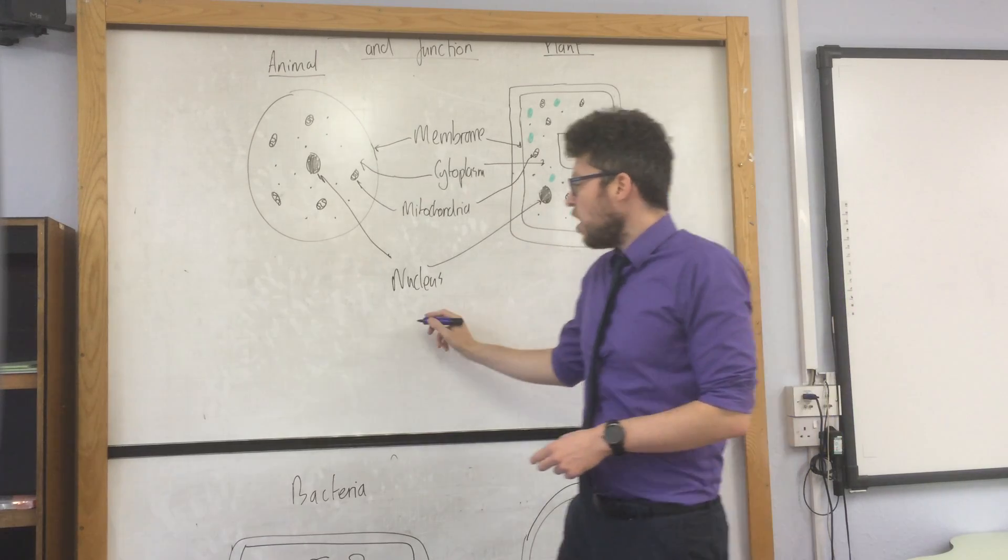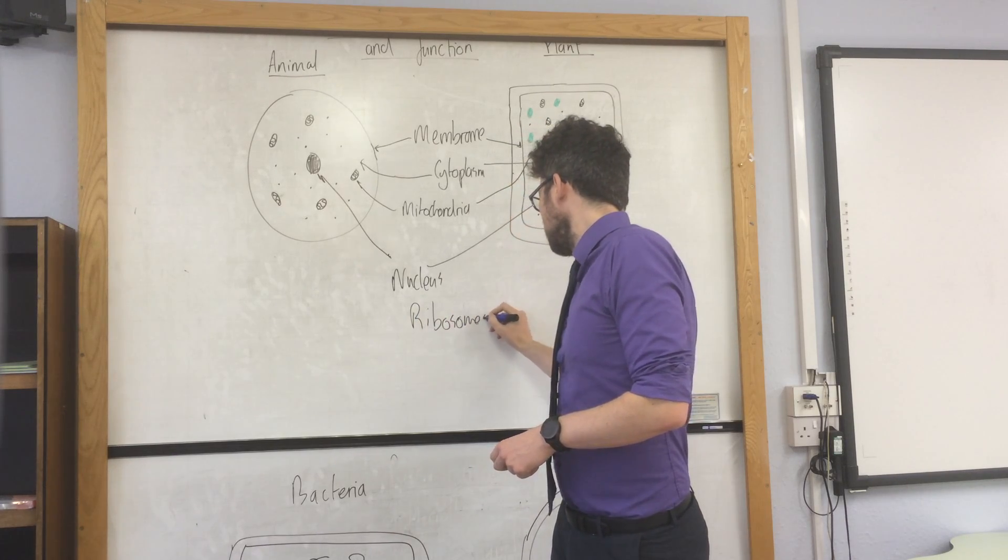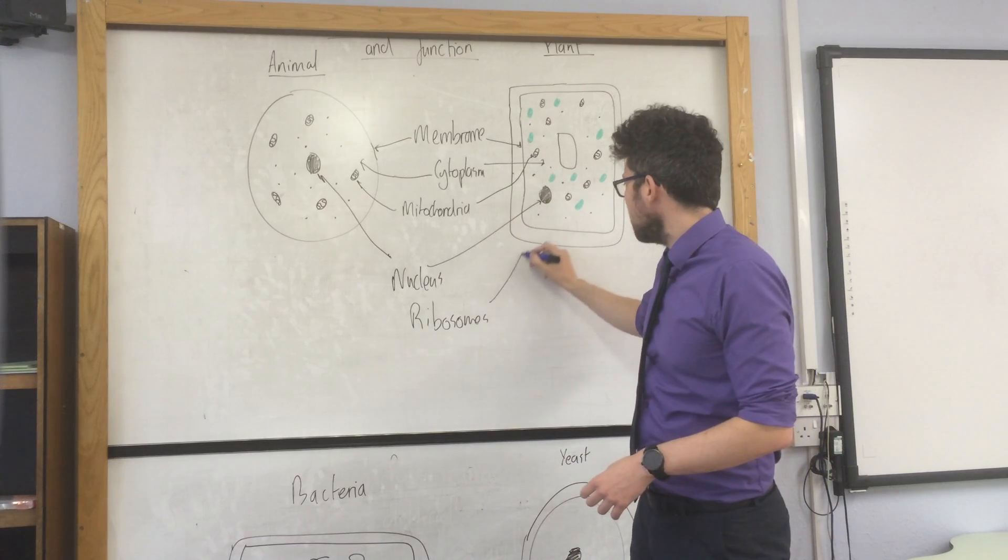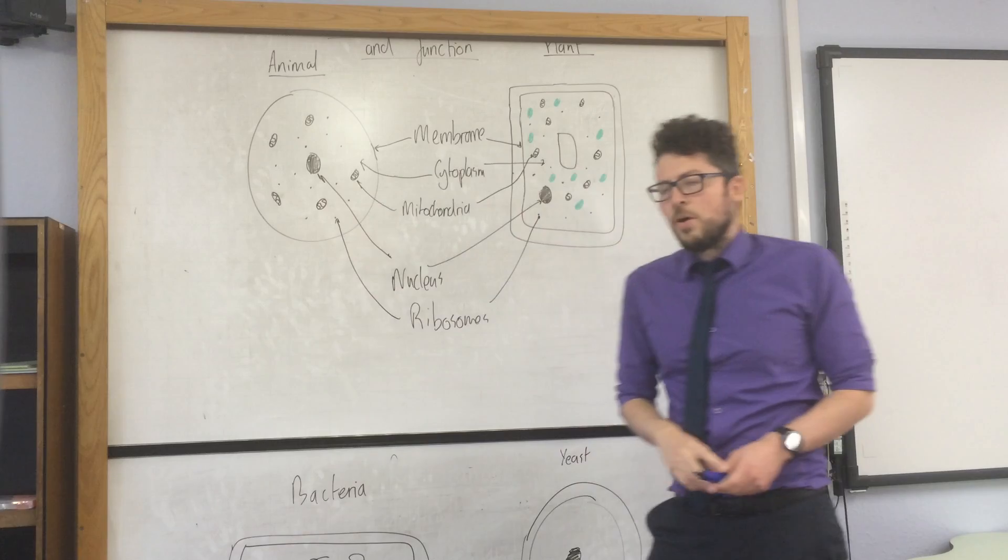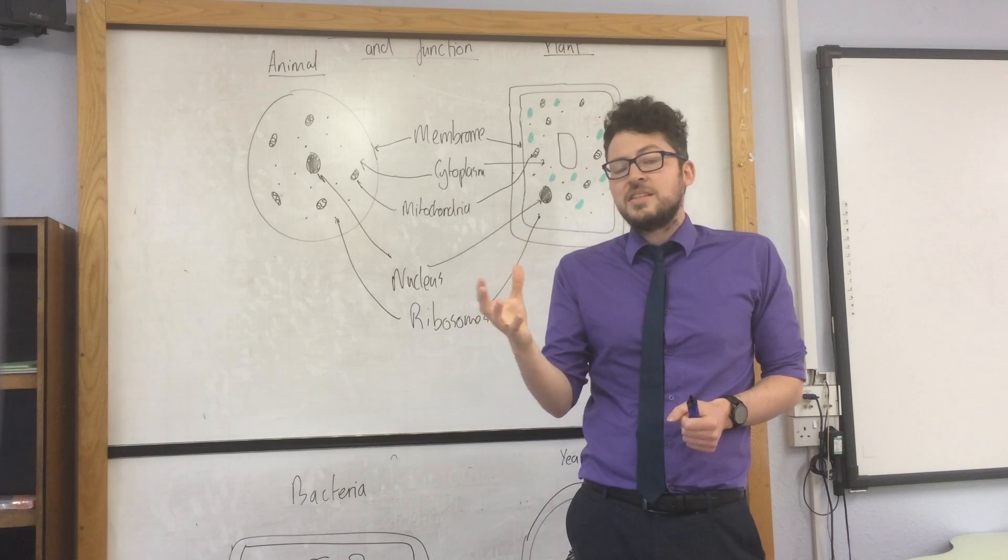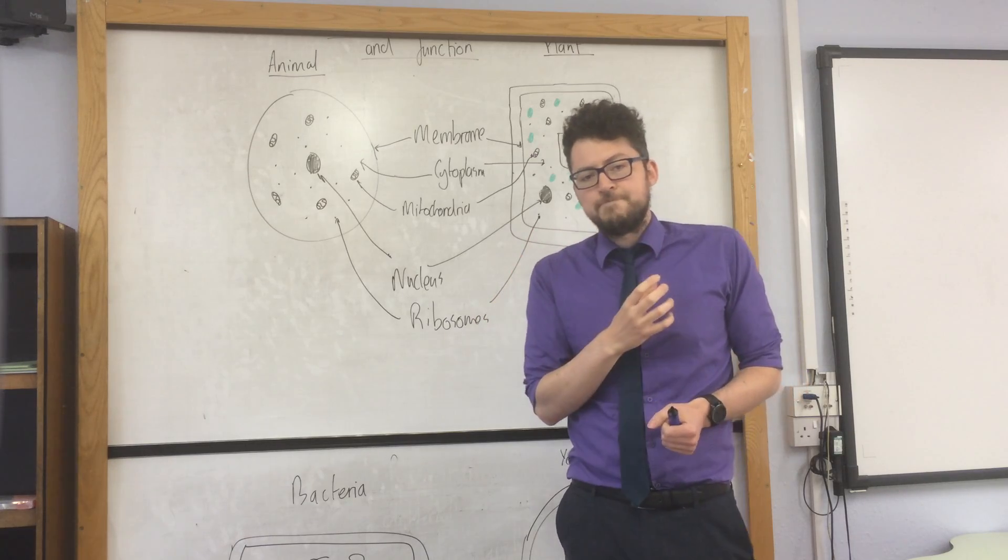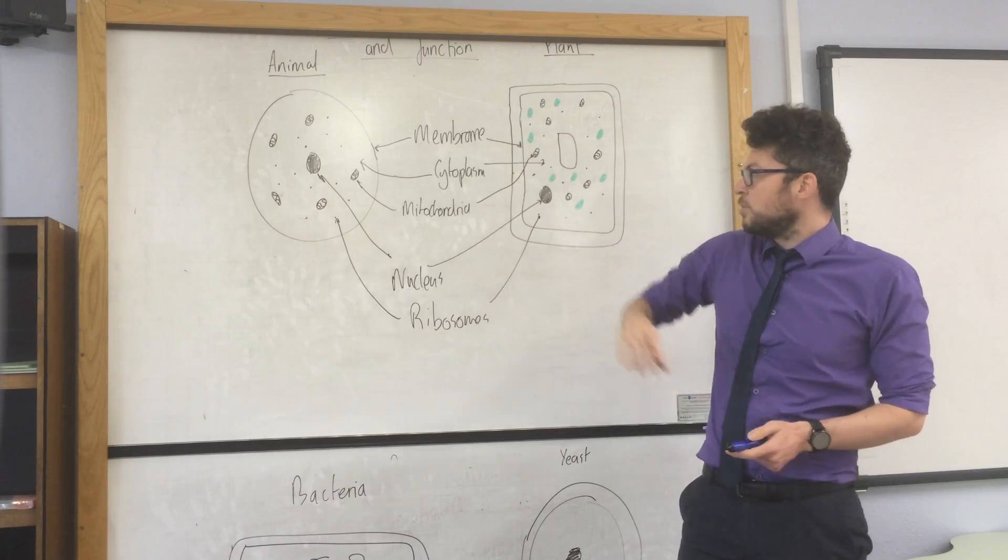And finally, both contain ribosomes. Ribosomes are these small dots here and here. What they do is they produce proteins. They're the site of protein synthesis or protein production. That is the features that are shared by both plant and animal cells.